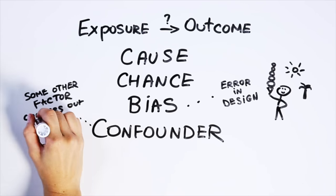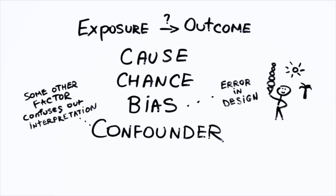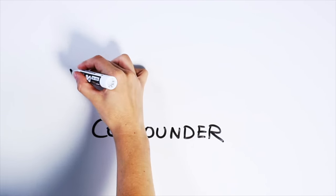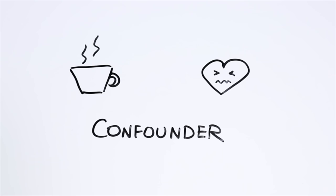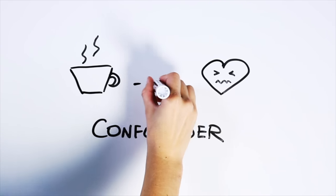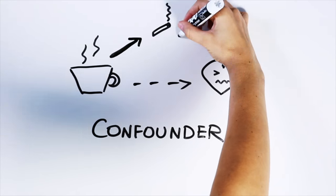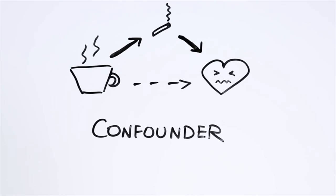Confounding, on the other hand, is where other factors confuse our interpretation of exposure and outcome. For example, imagine a study that suggests people who drink more coffee are more likely to develop heart disease. It'd be tempting to conclude that coffee causes heart disease. But people who drink coffee also tend to smoke. In this case, smoking is a confounder. Since it is associated with both drinking coffee and heart disease, it can make it seem that coffee causes the condition, if we don't take smoking into account.